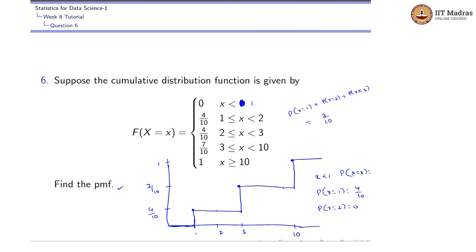For x less than 1 the probability is 0. For x = 1, exactly, we have a probability of 4/10 — there is a sudden spike there. For x = 2, there is no spike in the step function graph, so P(x = 2) = 0. At x = 3: P(x=1) + P(x=2) + P(x=3) = 7/10, the cumulative probability until there is 7/10. This implies 4/10 + 0 + P(x=3) = 7/10, so P(x=3) = 7/10 − 4/10 = 3/10.